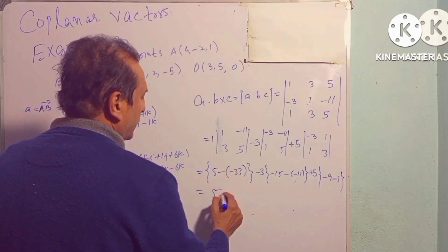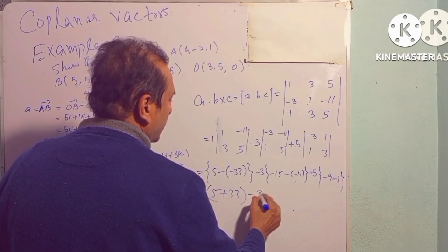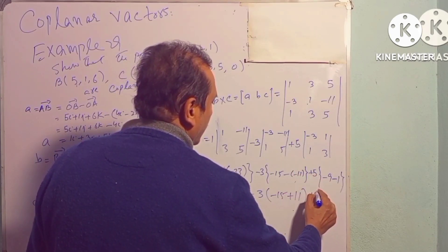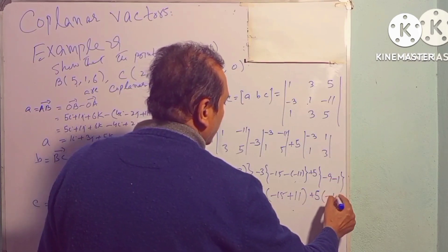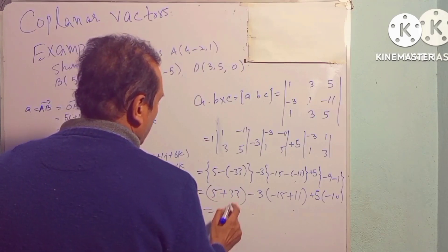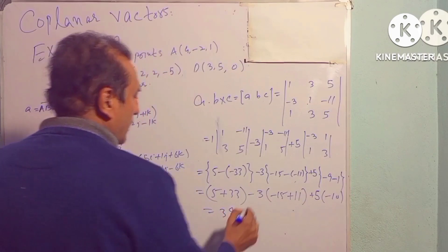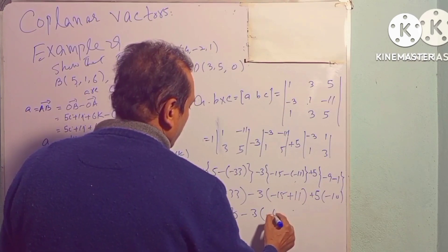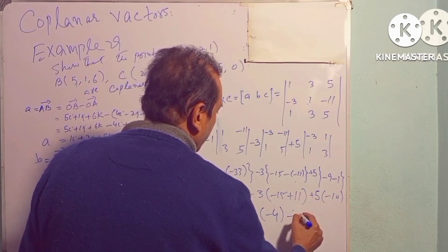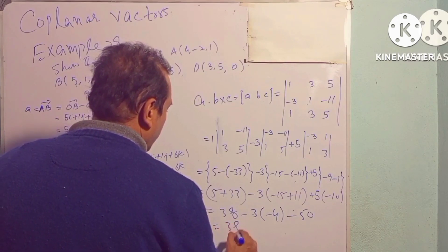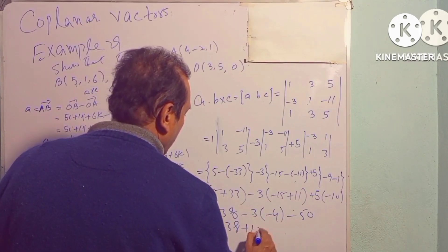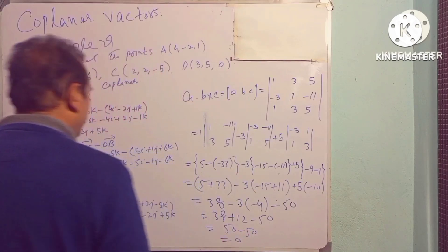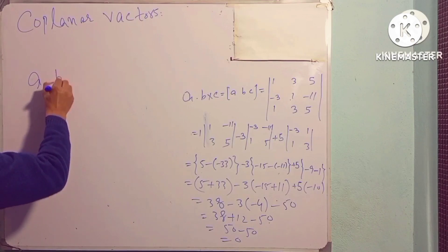So the result is: 38 + 12 − 50 = 50 − 50 = 0۔ کیونکہ a · (b × c) = 0 آ گیا۔